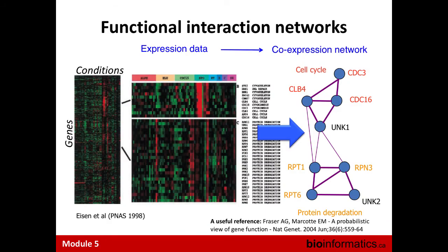To explain gene recommender systems, I'll first tell you about functional interaction networks, because understanding those is key to understanding what these systems do. A functional interaction network is a network where the nodes are genes and the connections represent some form of similarity — typically signaling co-functionality between the genes. If two genes are connected with stronger links, that means they're more similar and more likely to be co-functional. Some people call these co-functional networks.